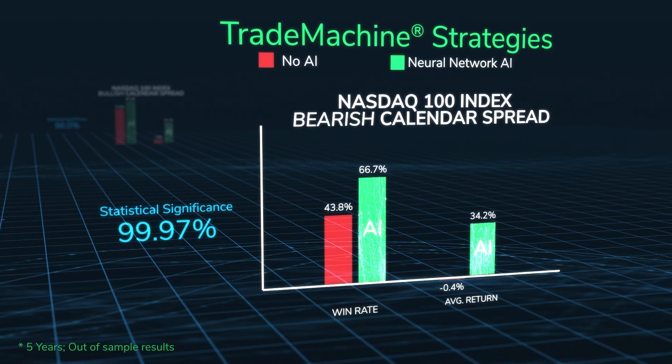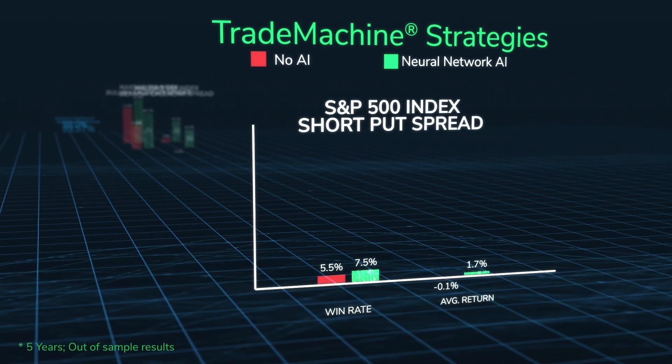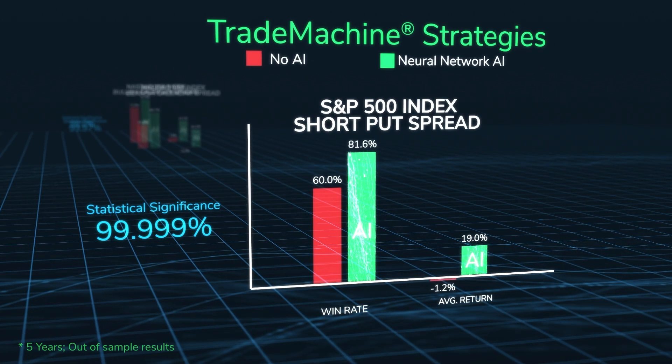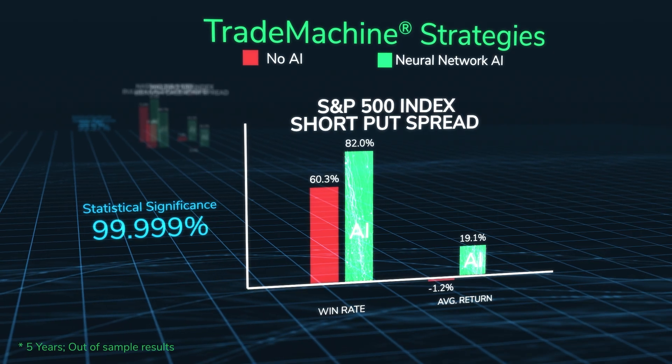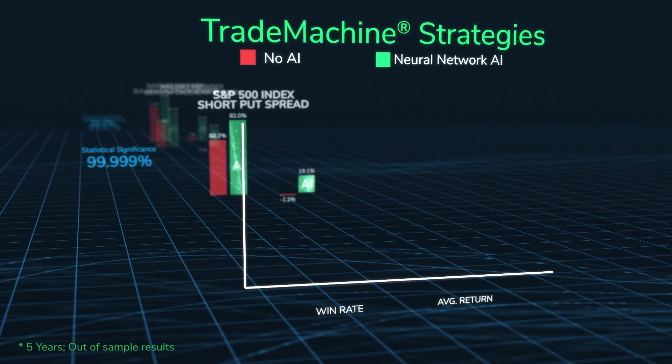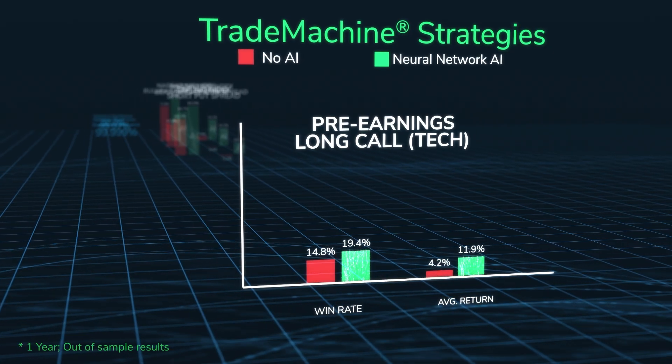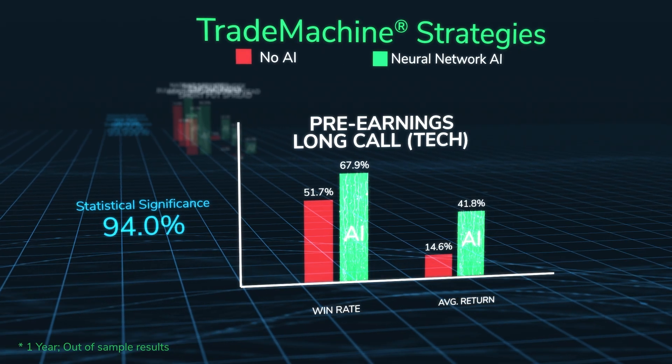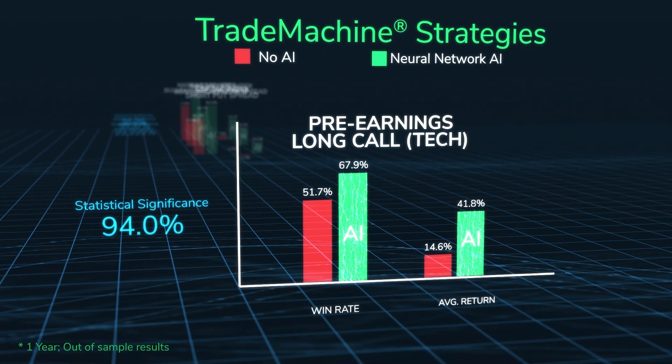That's what this system does. It converts messy, high-dimensional market behavior into a clear probabilistic view of tomorrow—a repeatable edge you can actually use. And that's what makes it a genuine breakthrough in applied market intelligence.